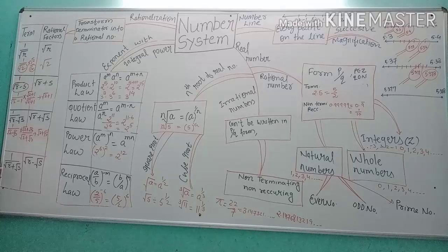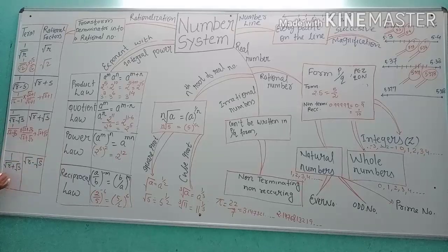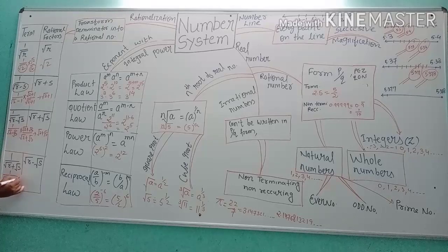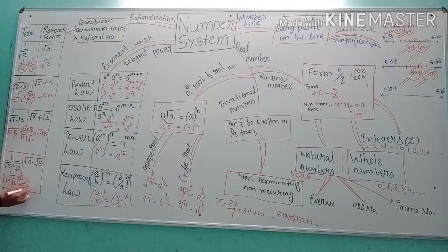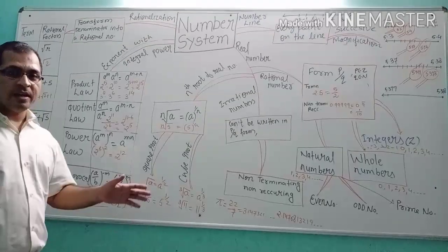If the term is in the form 1 upon (root R plus root S), its rationalizing factor is root R minus root S. For example, if the number is in the form root 3 plus root 2, multiply and divide by (root 3 minus root 2), so the rationalizing factor is root 3 minus root 2.